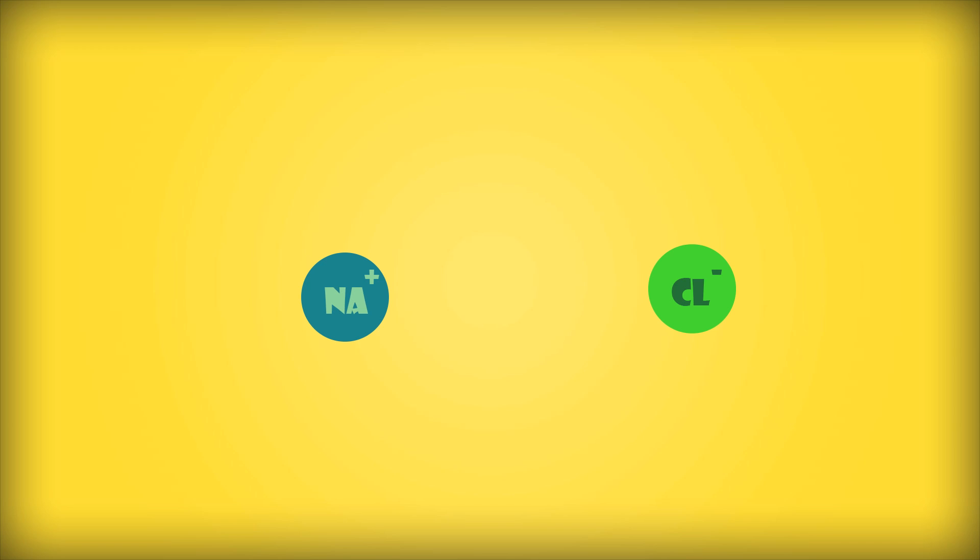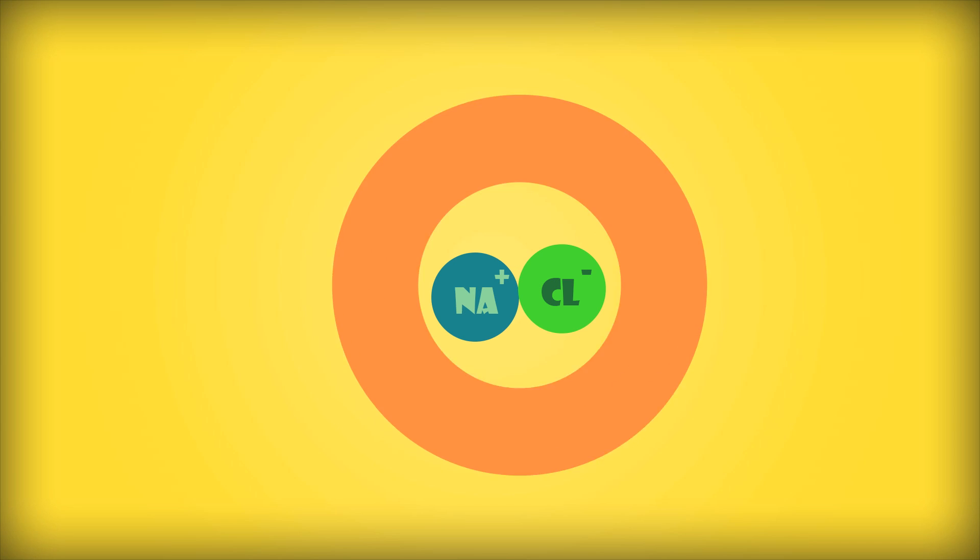Once these ions are formed, they are attracted to each other as they are oppositely charged, and thus form an ionic bond. But remember, no physical bond is formed. It is merely an attraction of two oppositely charged species.